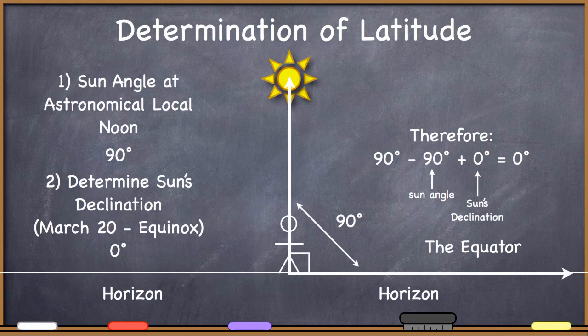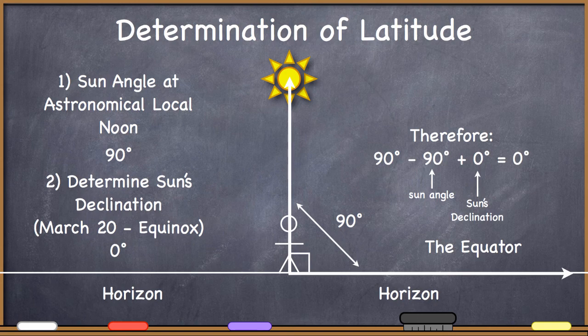Let's take a look at a couple of examples. Here is somebody who goes outside and sees that on this particular day at local noon the Sun is directly overhead — that makes the Sun angle 90 degrees. We need to know the Sun's declination, so we need to know what day this is. Let's assume this measurement is taken on March 20th, the equinox. For that one, you shouldn't even need the analemma — the declination of the Sun at an equinox is 0 degrees. Therefore, 90 degrees minus 90 degrees (the Sun angle) plus 0 degrees (the Sun's declination) equals 0 degrees, meaning this person must be standing on the equator, at a latitude of 0 degrees.